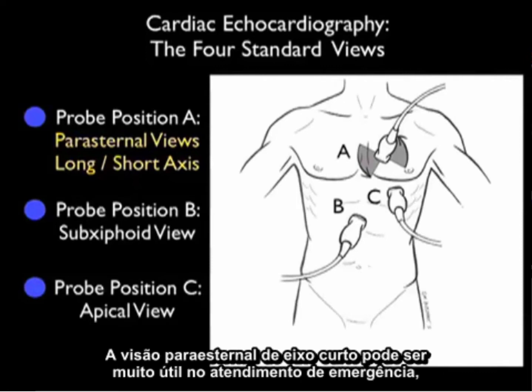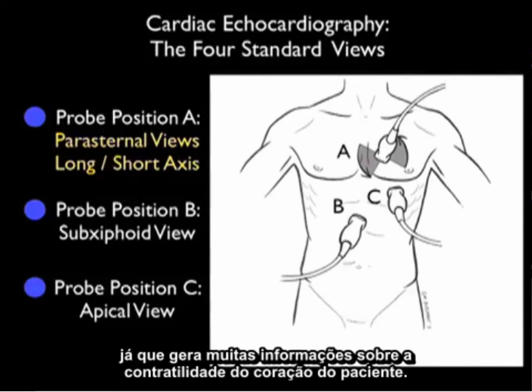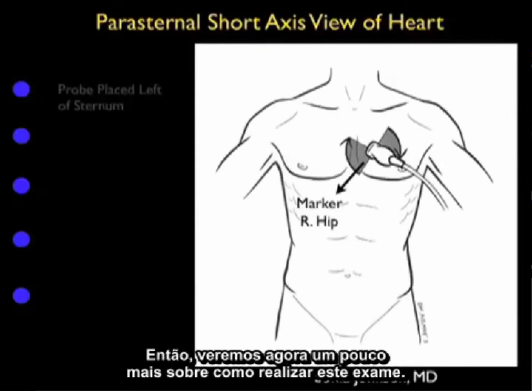The parasternal short axis view of the heart can be very helpful in emergency care, as it gives a great deal of information about the contractility of our patient's heart. So let's look now further into how to perform this examination.